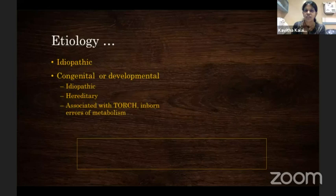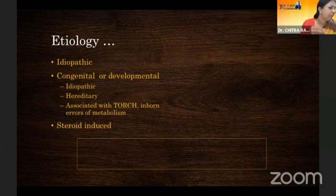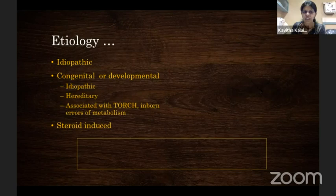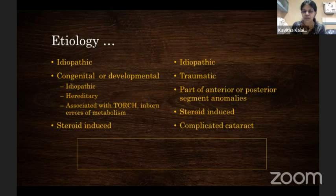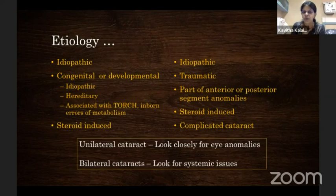For bilateral cataracts, most commonly it is idiopathic; otherwise congenital or developmental. If they present at birth, look for TORCH and inborn errors of metabolism. Steroid-induced cataracts can be bilateral. For unilateral cataracts, trauma is common; it can be part of anterior or posterior segment anomalies, and uveitic cataracts can also present as unilateral. In a nutshell: for unilateral cataracts, look closely for eye anomalies; for bilateral cataracts, look for systemic issues.